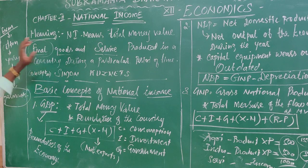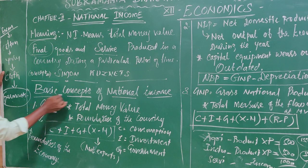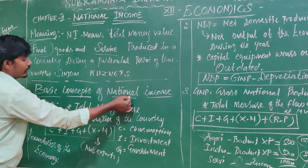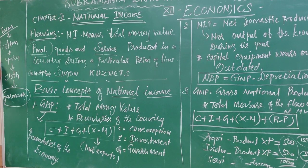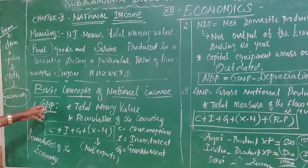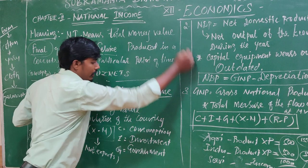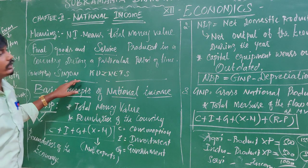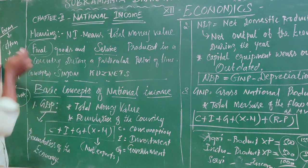This is the meaning of national income. Another basic concept of national income — there are many types: first, GDP; NDP; GNP; and personal income; disposable income; and per capita income.